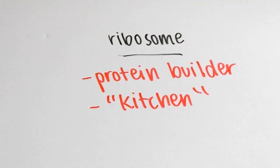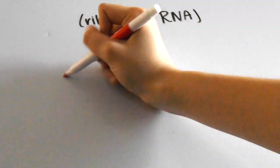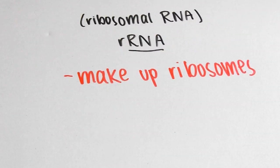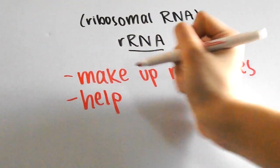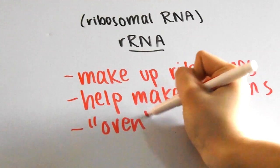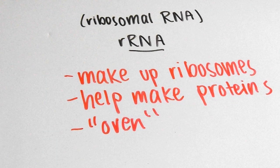And one last type of RNA is involved in the protein synthesis process called rRNA, which stands for ribosomal RNA. These RNA units simply make up the ribosomes and facilitate the making of proteins. You can think of them as the oven or any other kitchen appliance in this analogy.